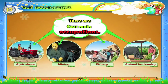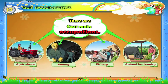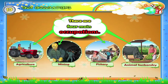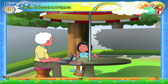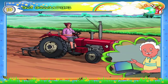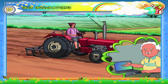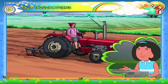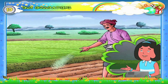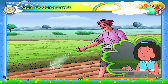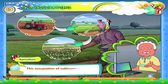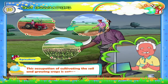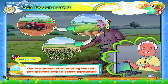There are four main occupations: agriculture, mining, fishery and animal husbandry. Have you ever seen a farmer at work? Yes, I have. He plows and prepares the soil for growing crops. This occupation of cultivating the soil and growing crops is called agriculture.